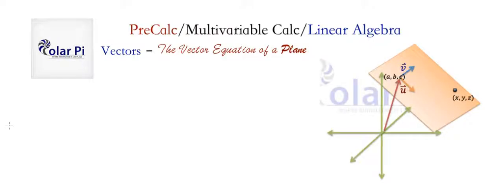Let's get started. So we've got our plane here. In order for us to write the vector equation of a plane, we need a point on our plane. The point on our plane here has coordinates A, B, C. We've drawn the position vector of that point in maroon here. Remember, a position vector is just a vector from the origin to a point. In addition to a point on our plane, we need two direction vectors.